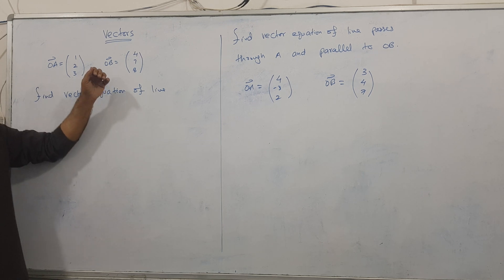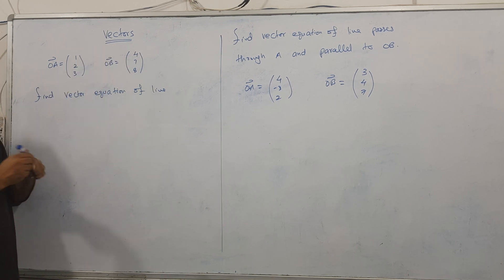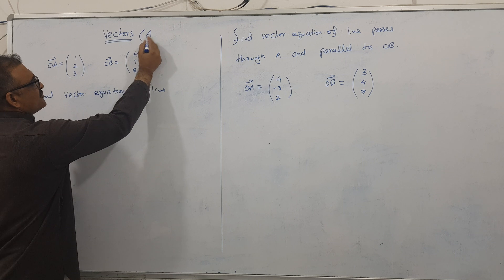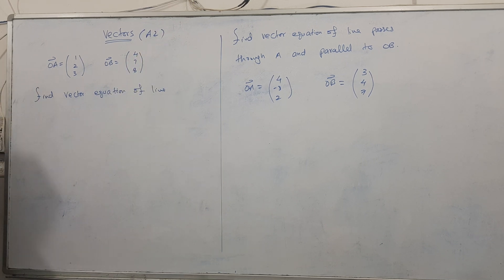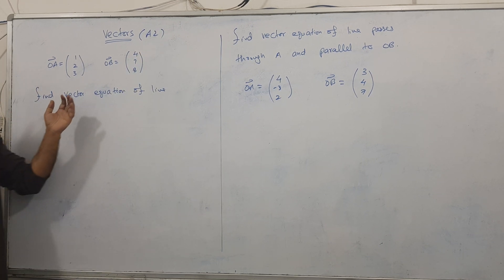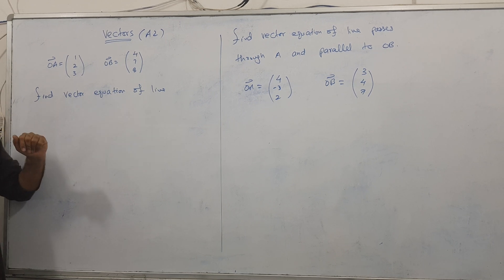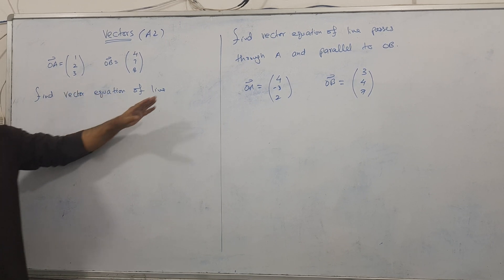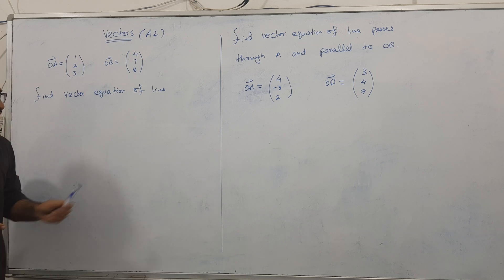The topic is vectors for A2 — this is called 12th grade A2. Our first task is to find the vector equation of a line. I have two examples to work through.